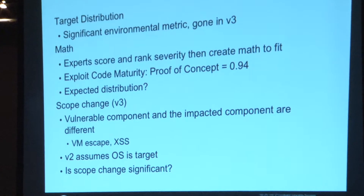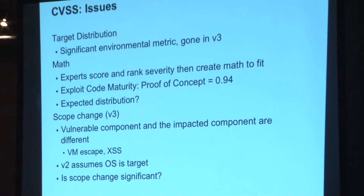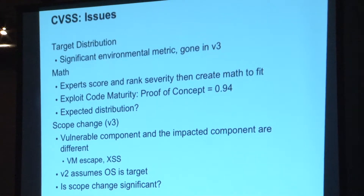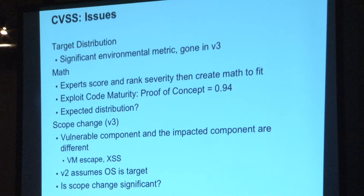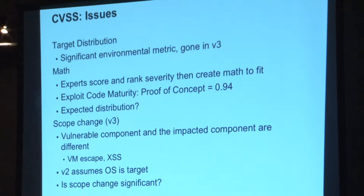Scope change in version 3 — there's a reason for this. The idea is I attack something and I get access to something else or impact something else. The examples are cross-site scripting: I exploit a vulnerability on a web page but the user's browser gets attacked. VM escape is maybe a more direct example. Version 2 assumed the operating system is the only thing you're after. Oracle had a great complaint about this — an Oracle database on an operating system: if I can own the database, who cares about the operating system? I didn't get root — oh fine, but I have all of your data. CVSS v2 didn't cover that well. Scope is an attempt to do that. It's difficult, it's awkward, it's hard to explain.